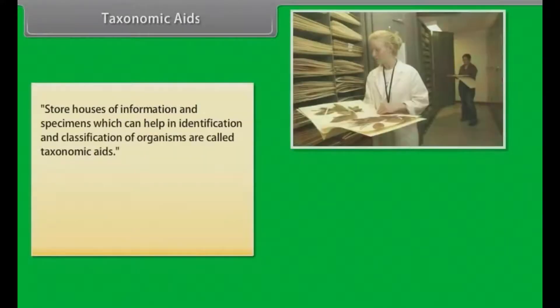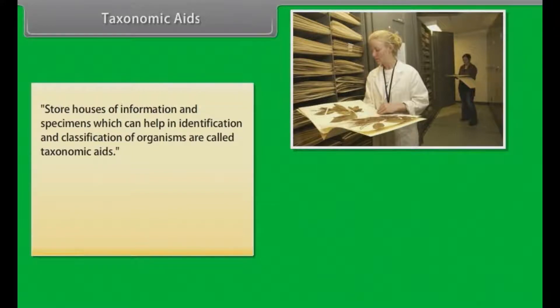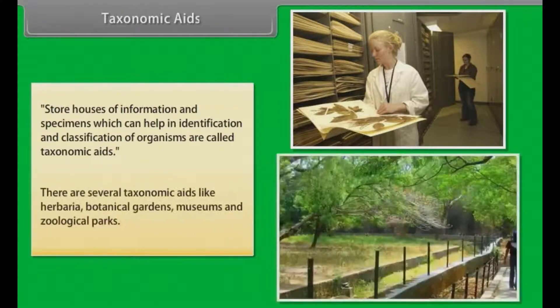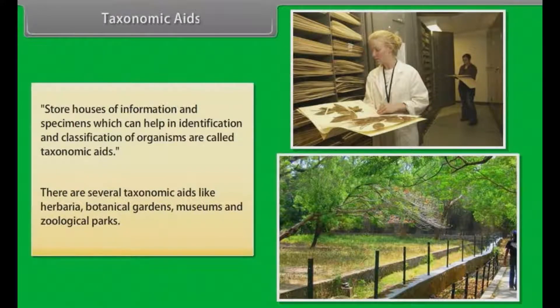Taxonomic aids are storehouses of information and specimens which can help in identification and classification of organisms. There are several taxonomic aids like herbaria, botanical gardens, museums, and zoological parks.